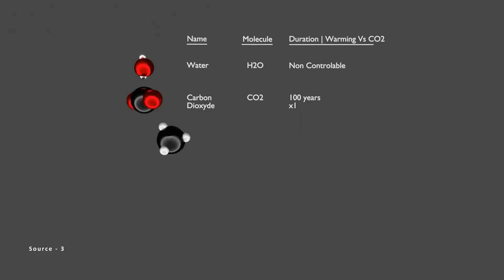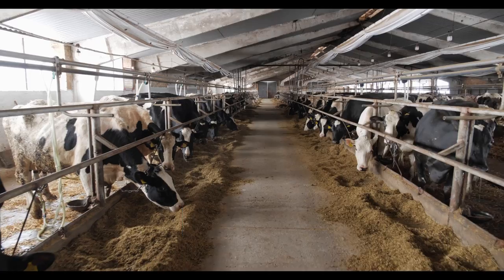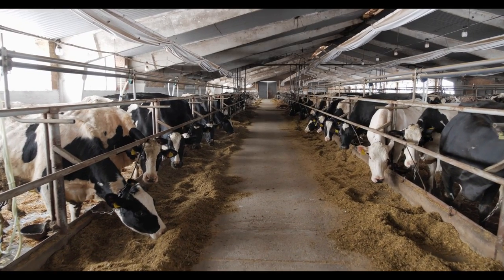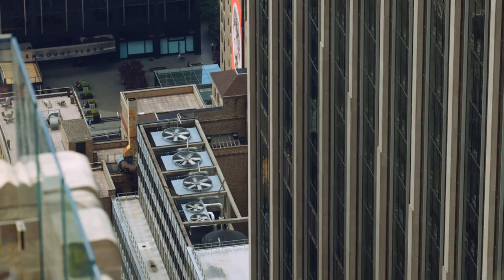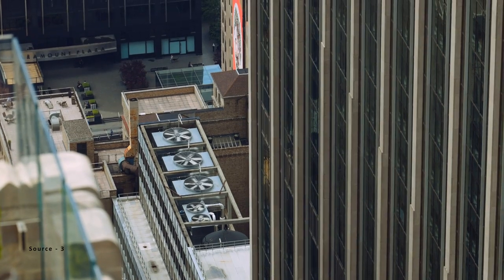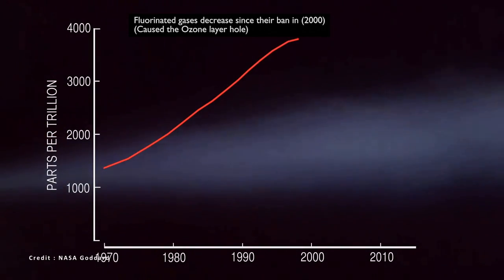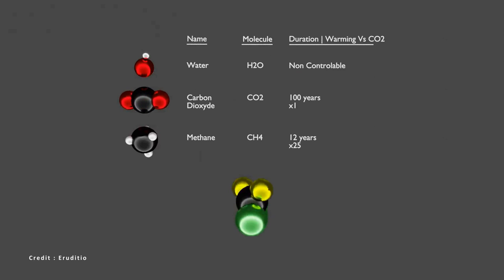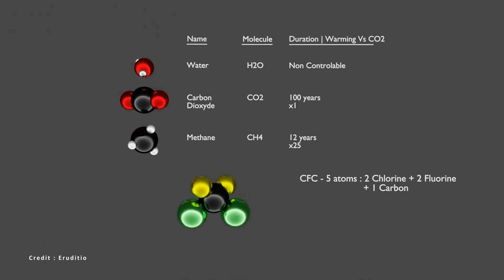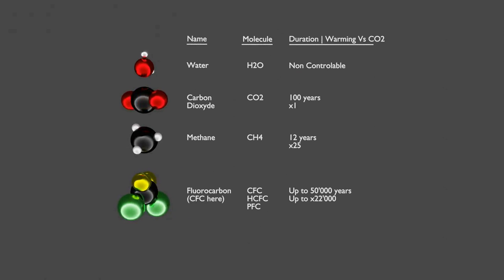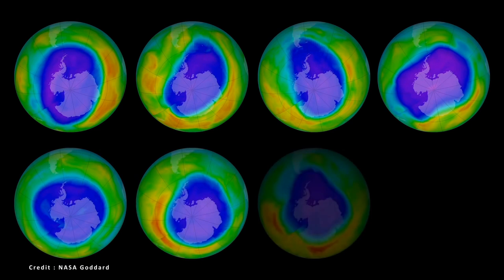Other man-made gases also cause the greenhouse effect. Some are even thousands of times more powerful than CO2, but their concentration in the atmosphere is limited, and their sources are controllable. For example, the CFCs, which cause the hole in the ozone layer, are banned since 1995.